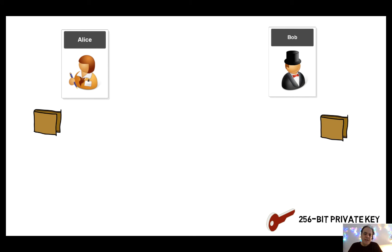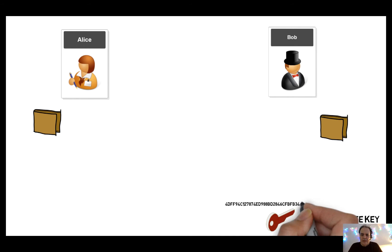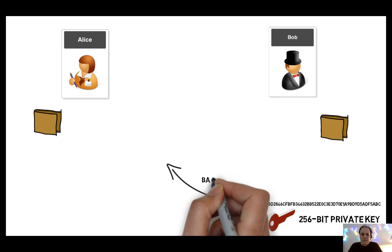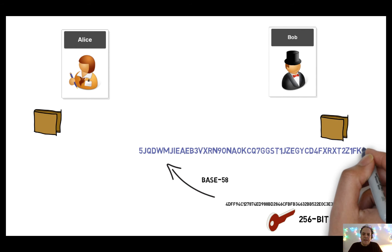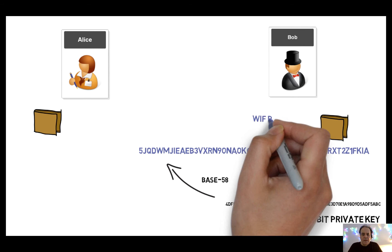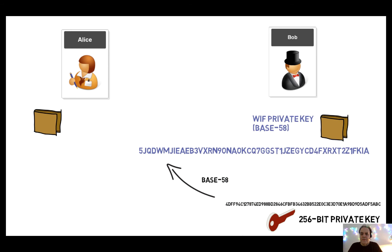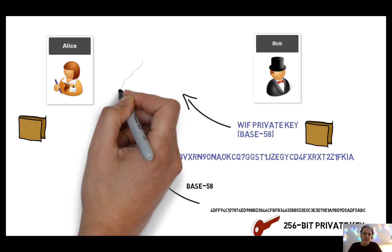Let's say Bob now wants to send Alice some money. The first thing he does is generate a 256-bit private key — this is a unique key that he will create. He then converts it into a format known as base58. Base58 is similar to base64 but certain characters that can be confused — like zero and the letter O — are missed out. This base58 format will be used to identify the transaction ID from Bob, and that defines our private key.